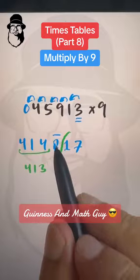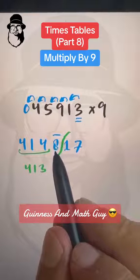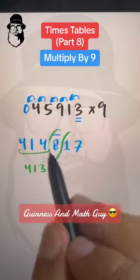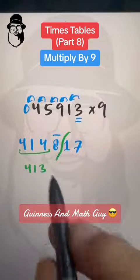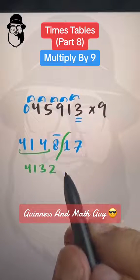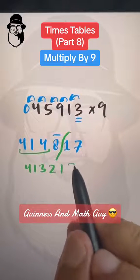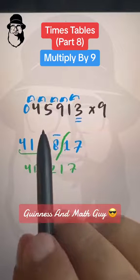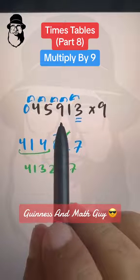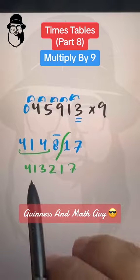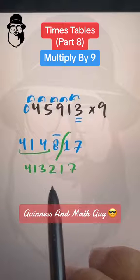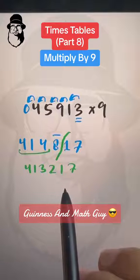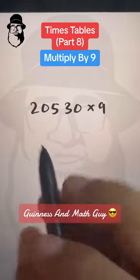On the bar numbers we apply 'all from 9 and the last from 10.' There is only one digit, so last from 10 is 2. We write 2, and then 17 we write as it is. So 45913 times 9 is 413217.